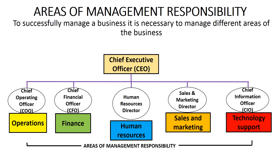Each of these areas is headed up by a manager — that is, a person who is responsible for that area. And each of these managers reports to the top manager of the business, who is called the chief executive officer, or the CEO.